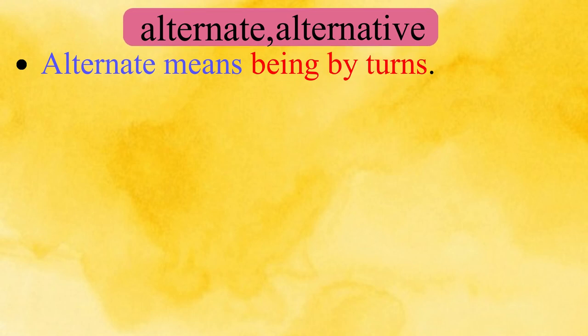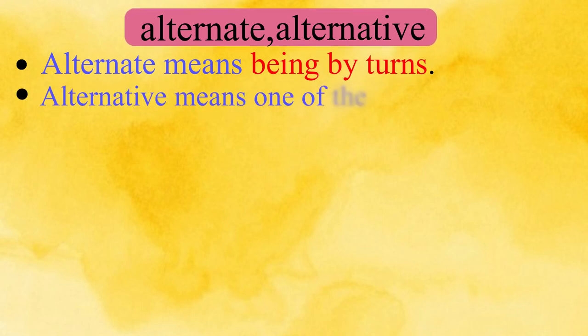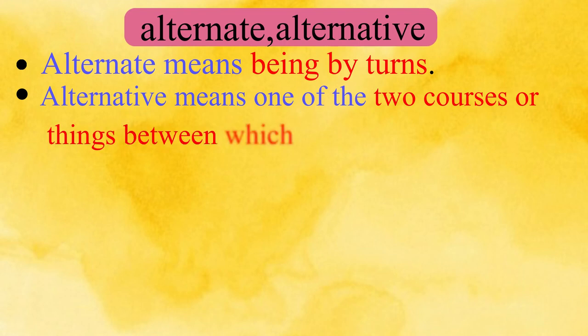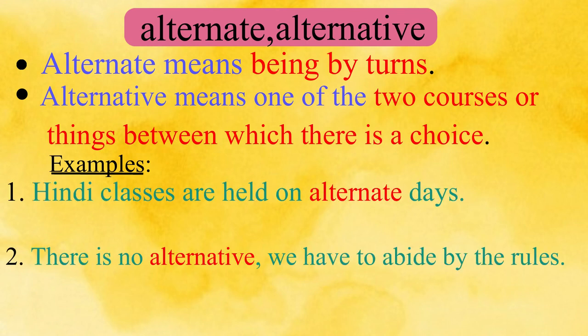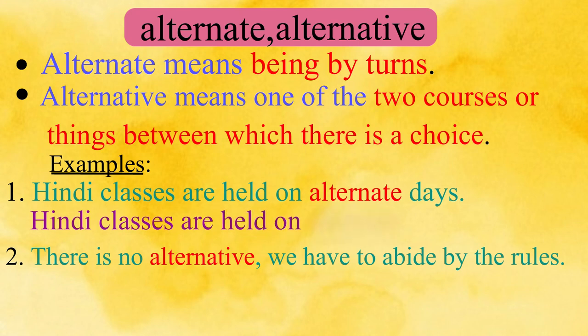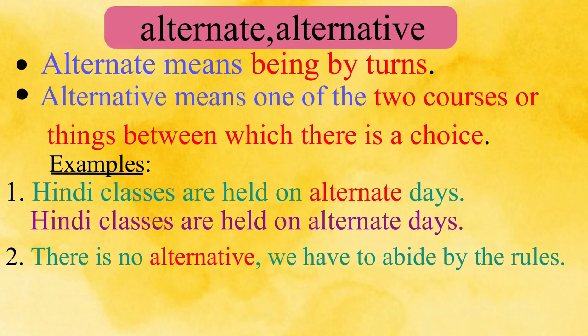Let us now understand the difference between the words Alternate and Alternative. Alternate means being by turns. Alternative means one of the two courses or things between which there is a choice. To understand, please repeat these sentences. Hindi classes are held on alternate days. There is no alternative — we have to abide by the rules.